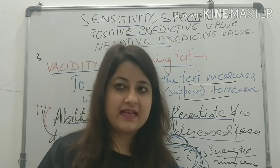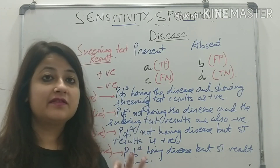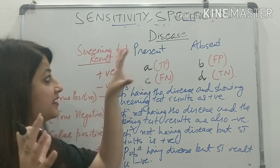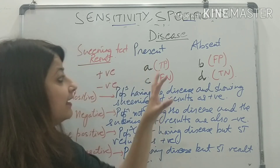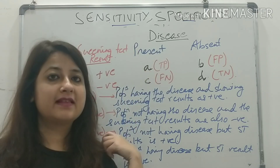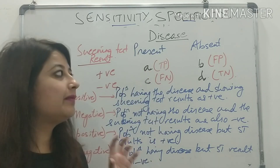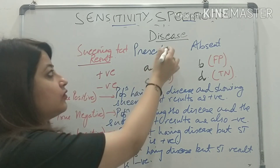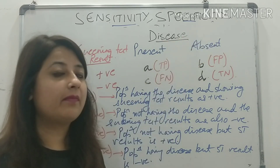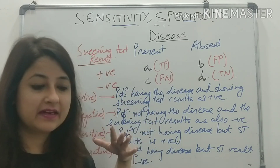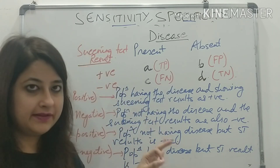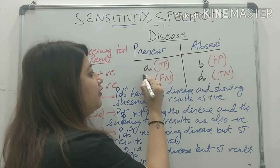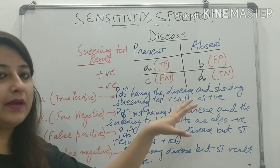To understand the concept of sensitivity and specificity, we need to understand a two-by-two table. Whenever questions arise on sensitivity and specificity, we need to make a two-by-two table. Please remember: in a two-by-two table, disease is always represented on the top and the result of the screening test is represented on the left in the rows.